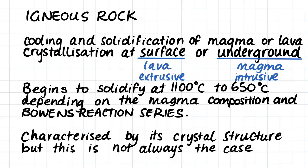Igneous rock is often characterized by having a crystal structure, however this is not always the case. The crystal structure comes from the fact that the molten rock solidifies, and the crystals can either be small or large, depending on whether the rock has cooled quickly or slowly.